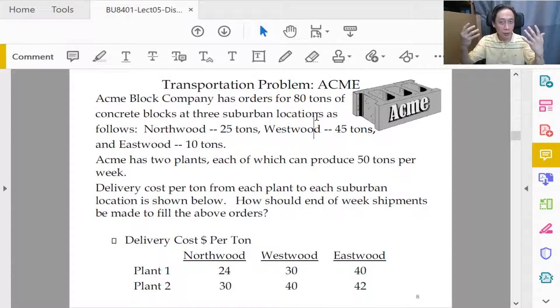So the three locations will have to be interpreted as customers. So in our mind we should place them on the right side. So yeah they are specified. In fact they have demands for 25 tons, 45, and 10 tons. So we know d1, d2, d3 the demands are clearly stated.